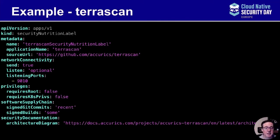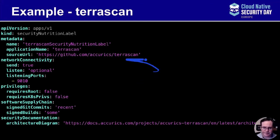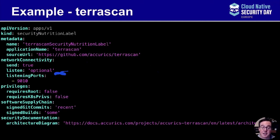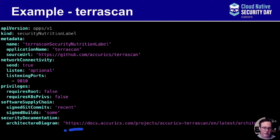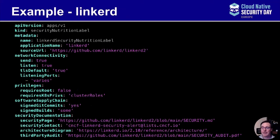Example two is Terrascan, an Accurix open-source application — an IaC scanner that can scan Kubernetes, Kustomize, Helm, and Terraform. It sends on the network by default to poll GitHub for rules. Listening is optional — it can run as a server or as an admission controller, but by default it doesn't listen. Recent git commits have been signed, and builds are signed. We have an architecture diagram, so we get a point on the advanced items. However, we don't yet have a security contact — that's something we need to add.